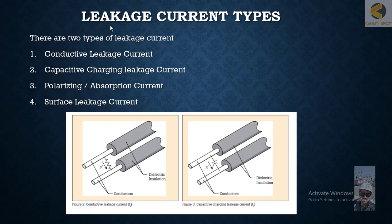In this section we will discuss the types of leakage current. As seen previously, leakage current depends on solution resistance and is the sum of four different currents: the conductive leakage current, the capacitive charging leakage current, the polarizing absorption current, and the surface leakage current. The sum of all four forms the total leakage current.